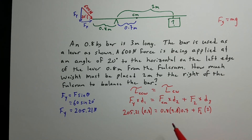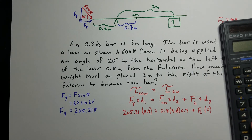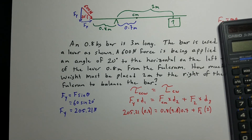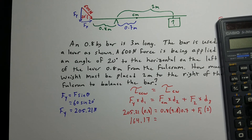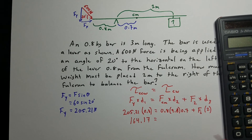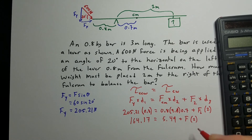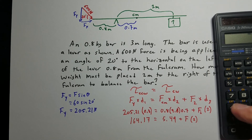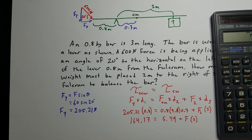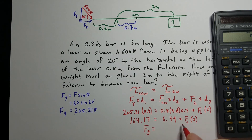Plugging in: 205.21 times 0.8 gives 164.17 on the left side. On the right, 0.8 times 9.8 times 0.7 equals 5.49. So we get 164.17 minus 5.49 divided by 2, and the required weight is 79.34 newtons.